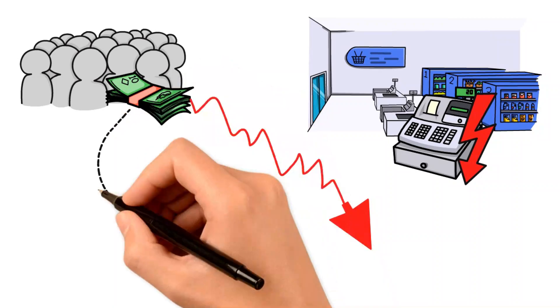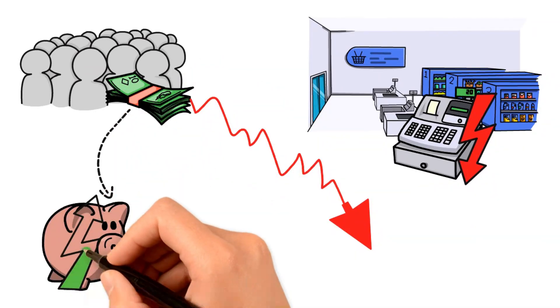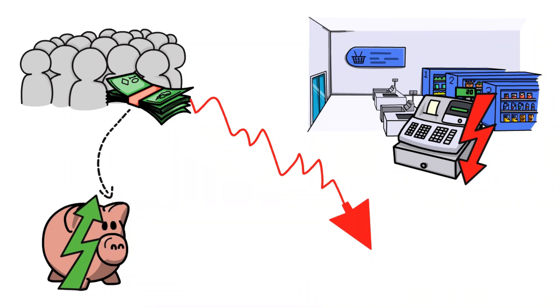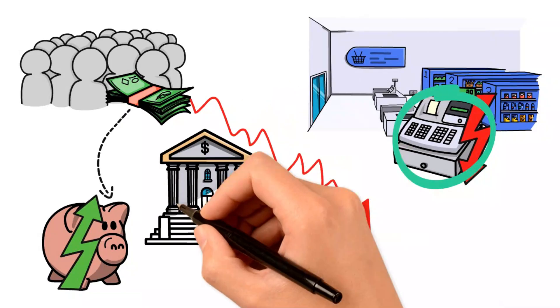This constantly anticipated downturn has been on the horizon for a while, initially projected for the previous year, then the first quarter of the present year, and now earmarked for the latter half of this year. In these scenarios, the concept of self-fulfilling prophecies looms large.